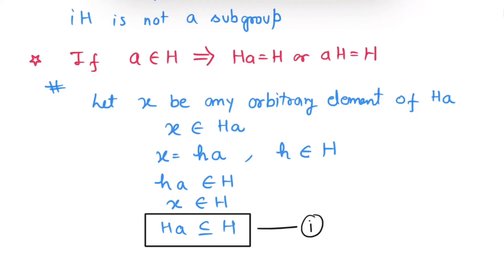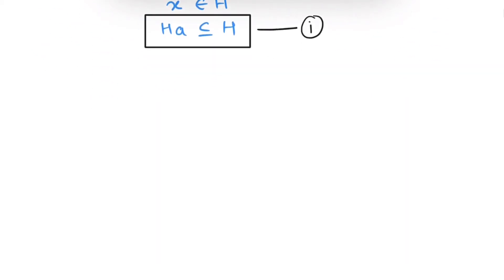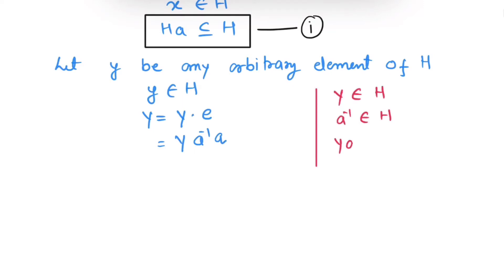Now, let us move in another direction. That is, H is contained inside HA. Let Y be any arbitrary element of H. That is, Y belongs to H. So we can write Y equals to Y into identity element E, and we can write this identity element E as A inverse A. Since Y is a member of H and A inverse is also member of H, because inverse of A exists in H, so by closure property, YA inverse will belong to H. Let us say this YA inverse is H₁. So H₁ belongs to H. So now we can write this Y as Y equals to H₁A.